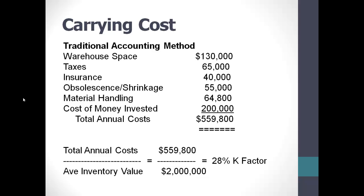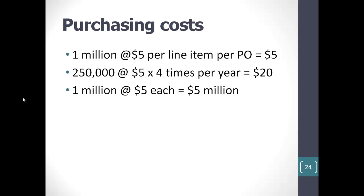If you take that argument to an extreme, you should only buy items when you need them because of this carrying cost — but you'd run into an odd purchasing problem. If I bought one million widgets all on one purchase order and my purchasing cost is $5 per line item per PO, that's $5. But if I bought them $250,000 at a time and did purchasing four times a year, my purchasing cost went to $20. And if I buy them one at a time, it's one million times $5 — my purchasing cost went to $5 million.